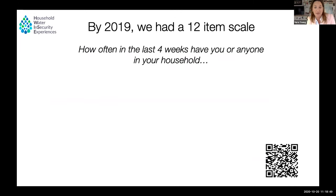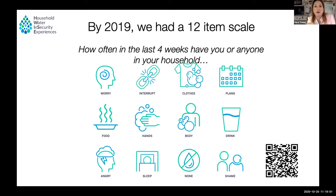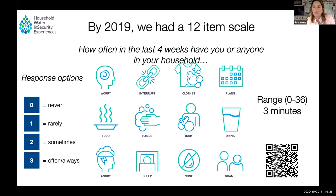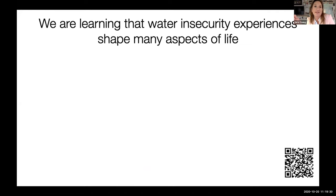Fast-forward another two years and we had a 12-item scale. These items are 12 questions phrased: 'How often in the last four weeks have you or anyone in your household...' — at the top: worried about water; middle row: changed the food that you prepared because of problems with water; gone to sleep without any water. Responses are weighted from zero for never to three for often or always, such that the range of the scale is zero to 36 and it takes about three minutes to administer. This week we'll have another paper coming out on a short form that takes only one minute to administer.